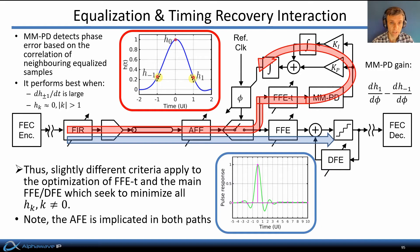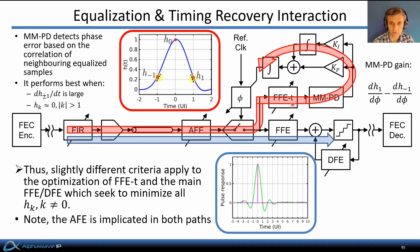Subtle interactions arise between digital equalization and timing recovery loops in DSP receivers. The common Muller-Muller phase detector operates by correlating neighboring samples of the received waveform to determine whether to advance or delay the sampling phase. Whereas the receiver's error is minimized by selecting equalizer tap weights to minimize ISI, timing recovery actually performs best when the slope of the equalized channel pulse response is high — specifically at the first pre- and post-cursors. These are slightly different criteria for optimizing the equalizer in the timing recovery loop versus the data recovery path, and since part of the equalization is implicated in both paths, it's quite difficult to say precisely how it should all be optimized.